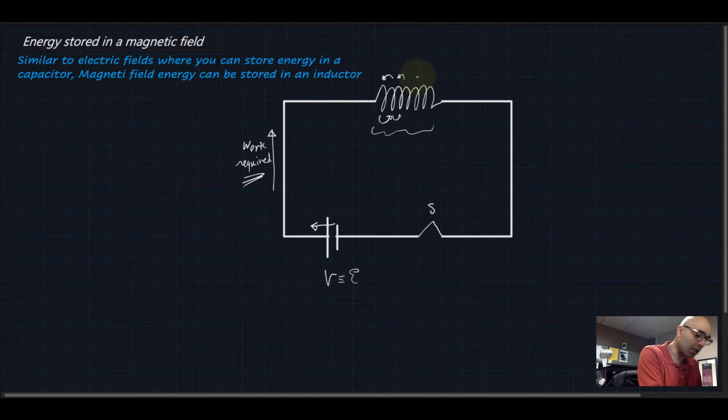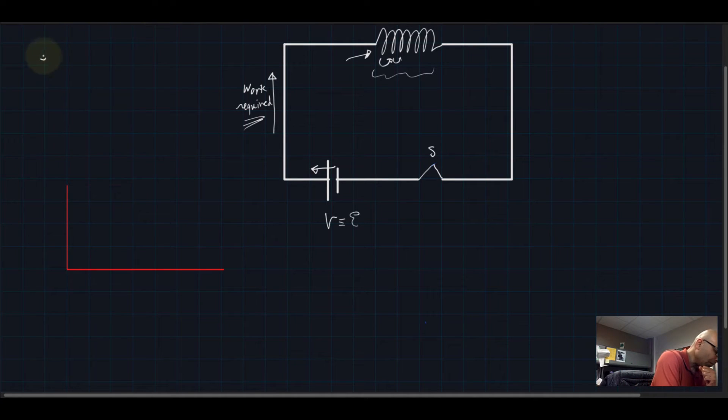This work gets stored into the inductor once you switch or close the circuit. We need to find the amount of energy stored in that inductor and this energy is stored in the form of a magnetic field energy. So first of all, we know that energy, and I am going to call it U, is equal to the average power times time. U is equal to P average times T.